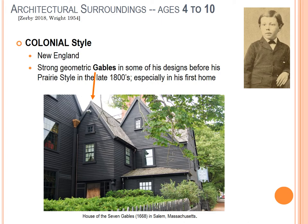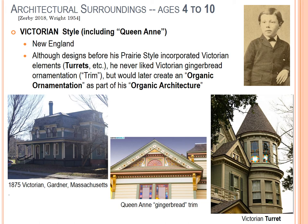Victorian style — FLW did not care for it in general, even though you see certain parts of it in some of his early designs. He really didn't like the frilliness — the gingerbread style of the Queen Anne Victorian. He has his own style in his organic architecture with organic ornamentation; it's not that he doesn't like details, just this particular gingerbread style he did not care for.